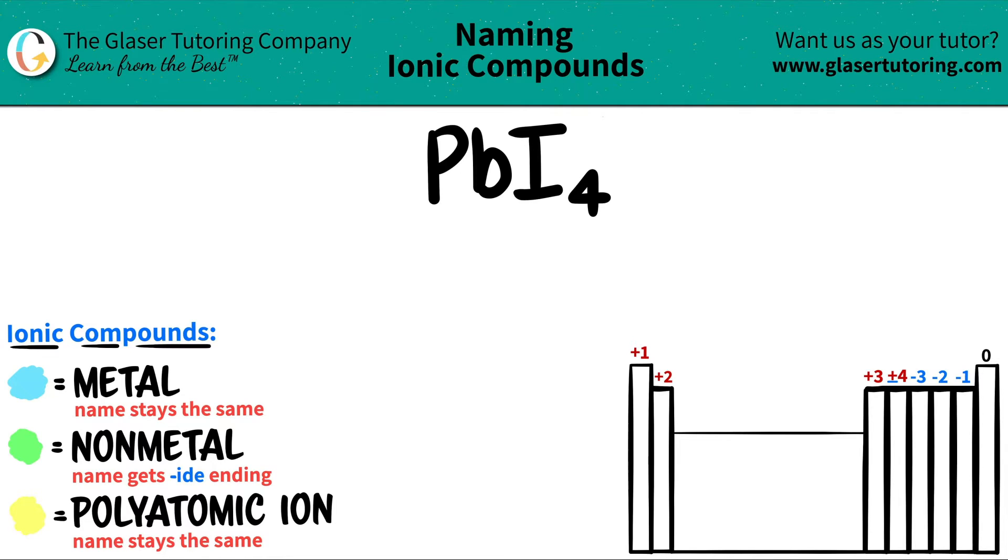Now, we have two different elements here. We have lead, which is Pb, and we have I, which is iodine.